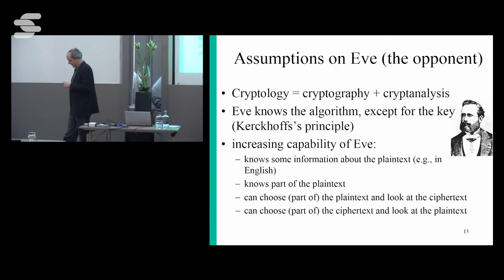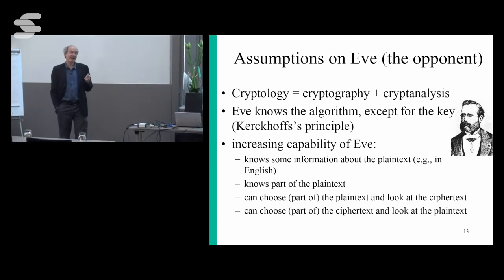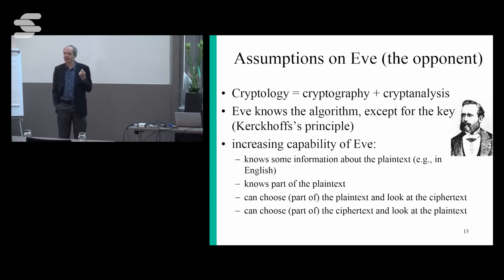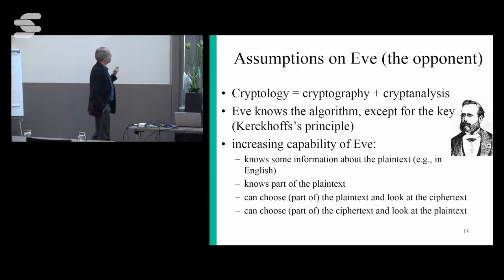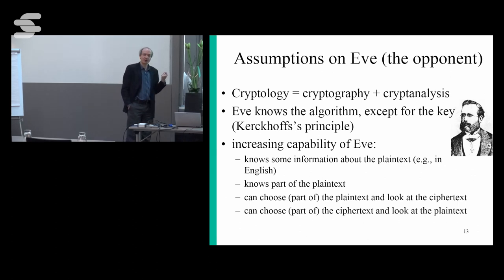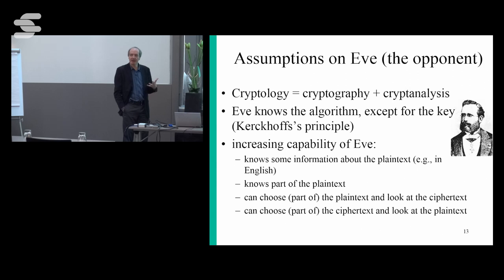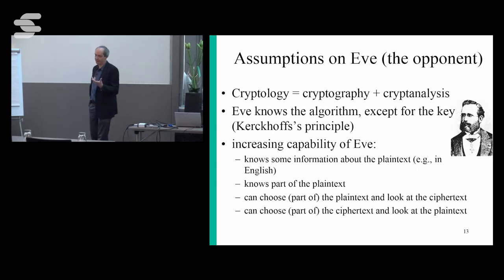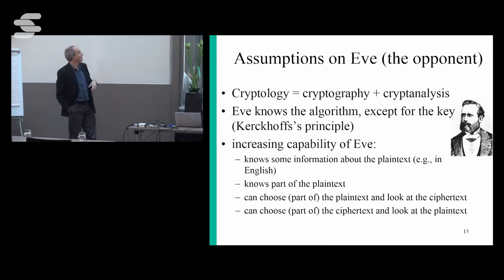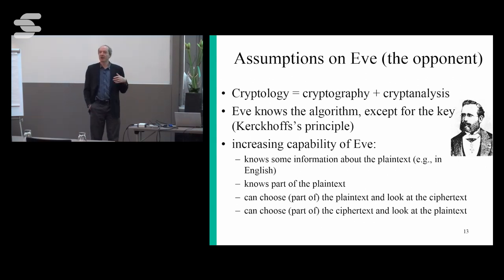Cryptology is the science of secrets, although today we're more worried about authentication of data and entities. 'Crypto' means hidden in Greek and 'logos' is word or science. It consists of two components: the people who make crypto systems — 'graphie' means writing in Greek — and cryptanalysis, which is the fun part, breaking other people's stuff.